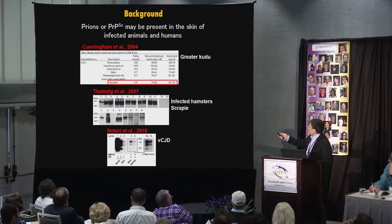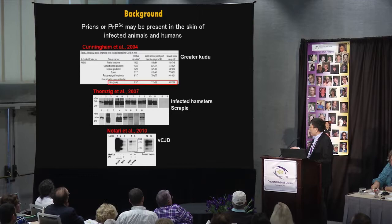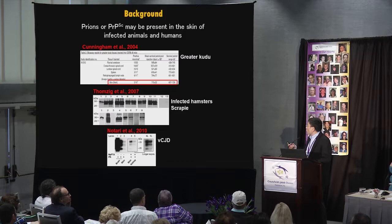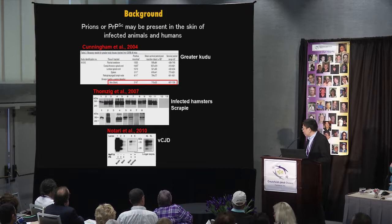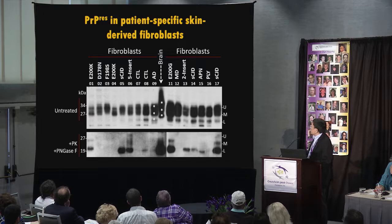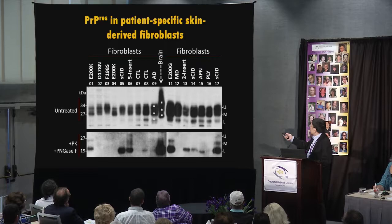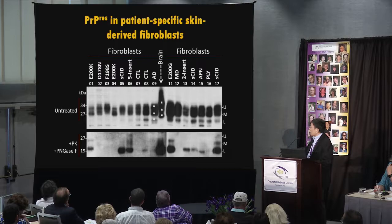Somtik and co-workers from Germany were able to detect PRPSC in the skin of infected hamsters with scrapie. And also in 2010, a co-worker from our surveillance center was able to detect PRPSC in the skin of a single variant CJD case. Our own studies also found that PK-resistant PRPSC is present in skin cells called fibroblasts from SCJD patients after protease K enzyme treatment.